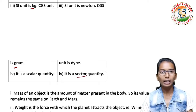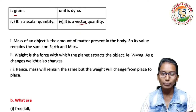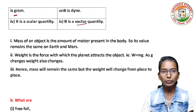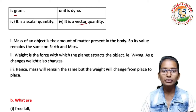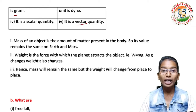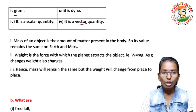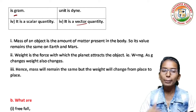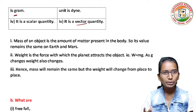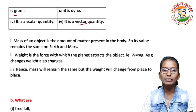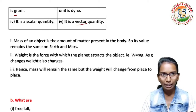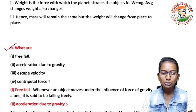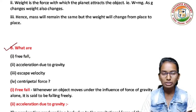Mass of an object is the amount of matter present in the body, so its value remains the same on the earth and on Mars. Weight is the force with which the planet attracts the body — W equals mg. Since gravity changes from place to place, weight changes. Hence mass will remain the same but weight will change from place to place.